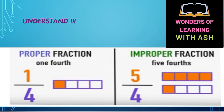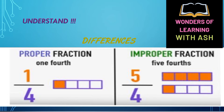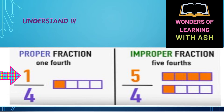Let's understand the difference between proper and improper fractions with examples. Proper fraction: one-fourth. One whole is divided into four parts and one part is shaded. The shaded part is the numerator and the total parts is the denominator, so the proper fraction is 1 by 4.